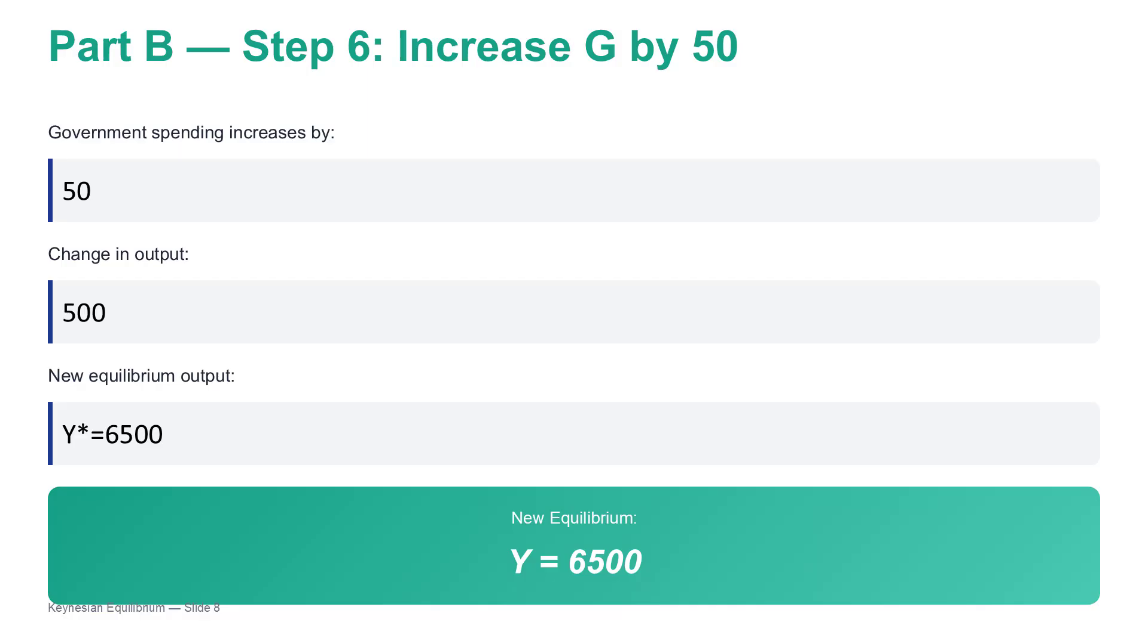So what does a multiplier of 10 tell us about this specific economy? It suggests an economy where money moves incredibly fast. Almost every shekel of new income is immediately spent. It gives the government phenomenal power. Is there a risk to having such a high-leverage tool? Oh, absolutely. The risk is overshooting. If the government miscalculates even slightly, they could blow past the 7200 target and create a serious inflation problem. But for now, our problem is deflation, so we need to use this tool.